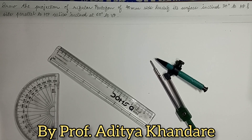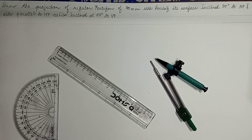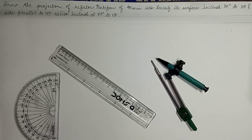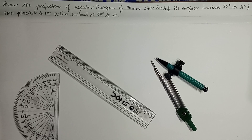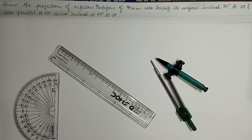Hello dear students, once again we are back with this video lecture. Today we will see a problem on projection of plane with the help of the auxiliary method. The question is: draw the projection of a regular pentagon of 40 mm side having its surface inclination at 30 degrees to HP and the side parallel to HP while inclined at 60 degrees to VP.